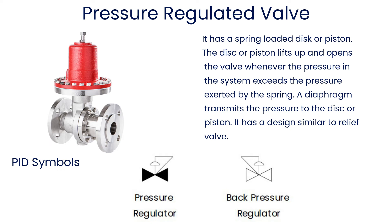Pressure regulated valve has a spring-loaded disc or piston. The disc or piston lifts up and opens the valve whenever the pressure in the system exceeds the pressure exerted by the spring. A diaphragm transmits the pressure to the disc or piston. It has a design similar to a relief valve.